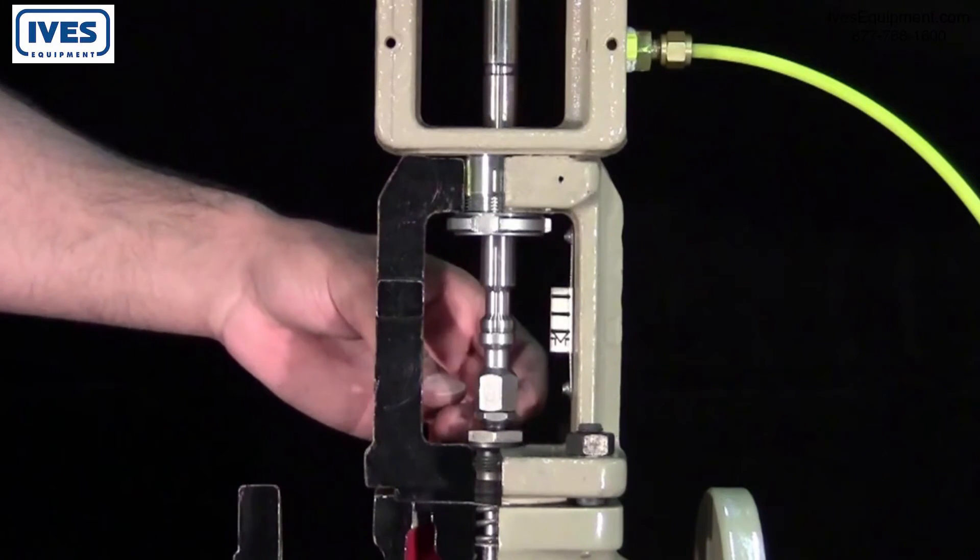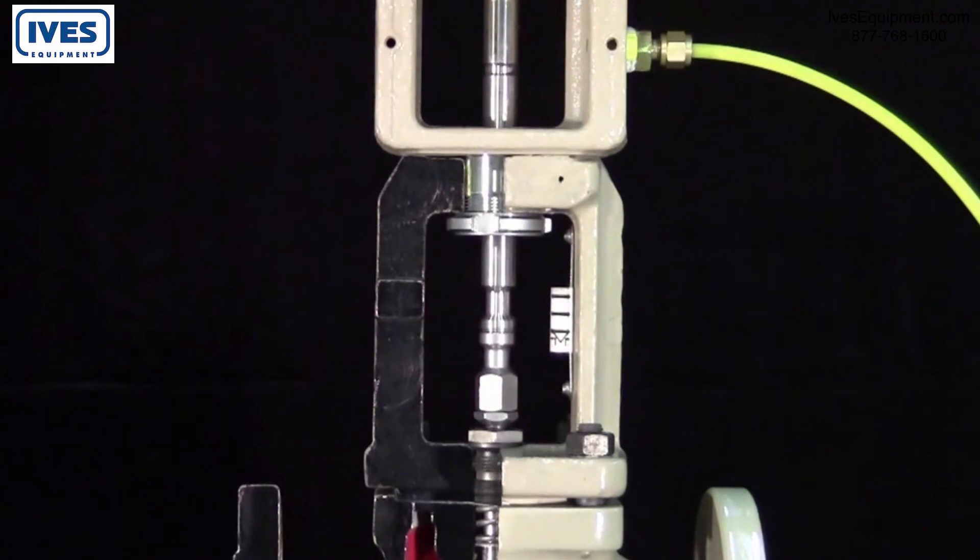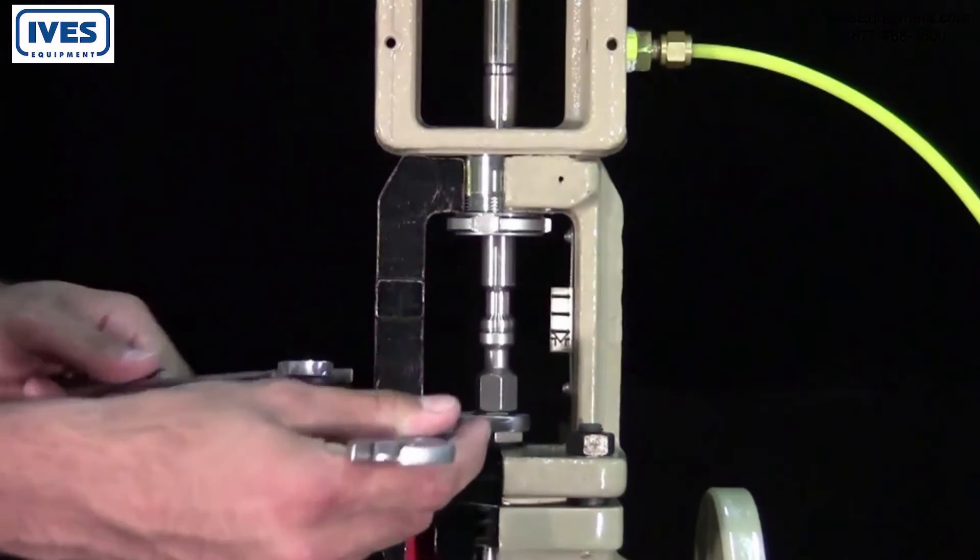Add an additional quarter turn. Then, raise the lock nut and secure into position with two wrenches.